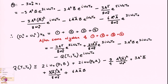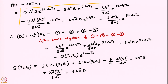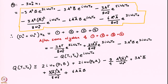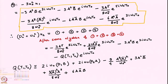So when we add these terms, I have provided the fourth term as well. The fourth term is this, and the first, second, and third terms have been provided earlier. After doing some algebra on these terms, one can simplify and obtain a simpler expression for this.